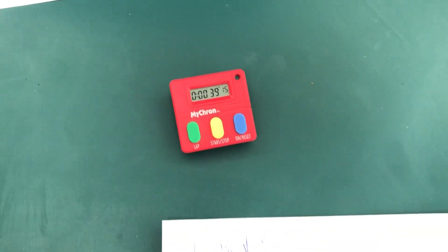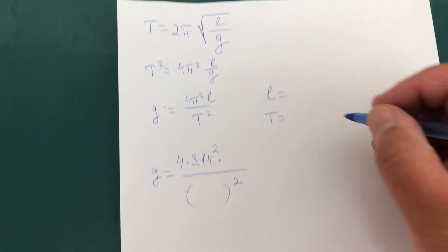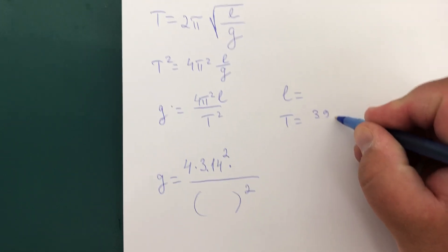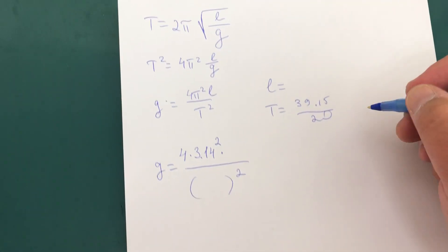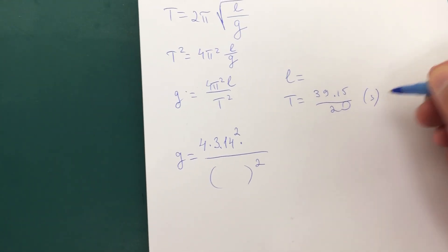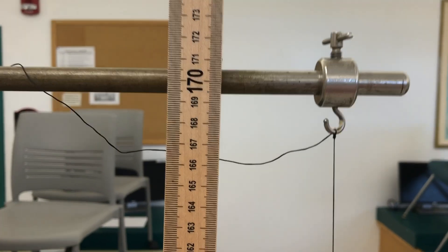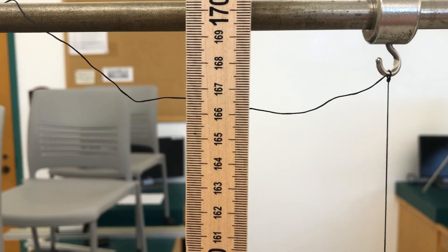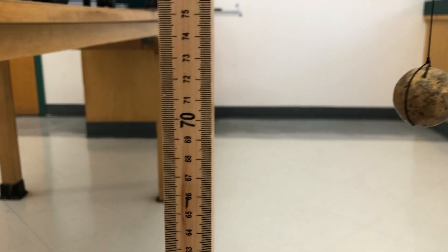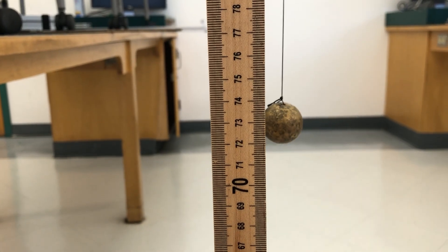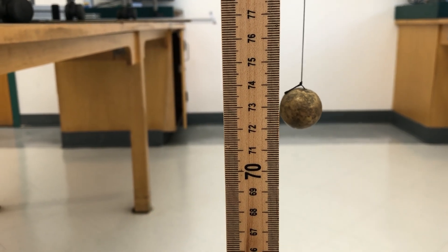Divide that by 20, that would be the period. The length of pendulum is from 168.72 and 68.